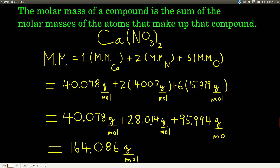Multiplying these out — be careful with sig figs and show individual steps. The one, two, and six are exact numbers since we're counting atoms, but the molar masses each have five sig figs. So when we multiply: 40.078, 28.014, and 95.994. When we add, we look at decimal places — the last sig fig is three places to the right of the decimal in each, so we keep three decimal places in the answer: 164.086 grams per mole. Notice we now have six sig figs even though each individual value had five. One mole of calcium nitrate equals 164.086 grams of calcium nitrate.